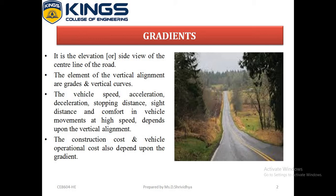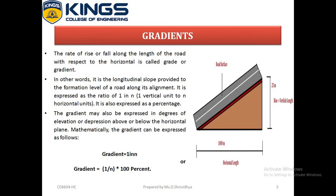The picture shows the gradient which was constructed on the road surface. The rate of rise or fall along the length of the road with respect to the horizontal is called a grade or a gradient. In other words, it is the longitudinal slope provided to the formation level of road along its alignment. The gradient can be mathematically expressed as 1 in N, where 1 is vertical and N is horizontal.